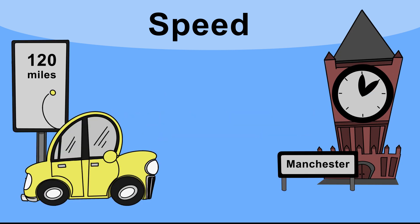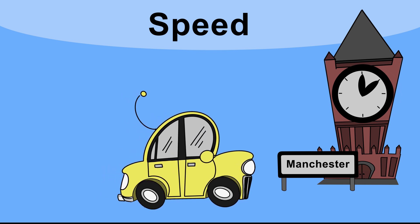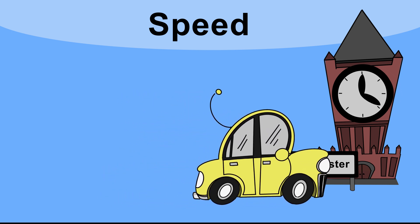So let's look at a car traveling to Manchester. We can see how far the car is traveling as the number of miles to Manchester decreases on the signs. So it was 120 miles to Manchester at 2pm and we can see that as the time moves on the distance slowly decreases until the car arrives in Manchester at 4pm.